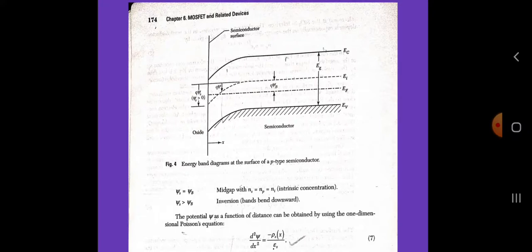In the absence of any work function difference, the applied voltage will appear partly across the oxide and partly across the semiconductor: V equals V_0 plus psi_s, where V_0 is the potential across the oxide and is given by V_0 equals epsilon_0 times d, which equals Qs times d divided by epsilon_ox, which equals Qs divided by C_0, where epsilon_0 is the field in the oxide, Qs is the charge per unit area in the semiconductor, and C_0 equals epsilon_ox divided by d is the oxide capacitance per unit area. The corresponding electrostatic potential distribution is shown in this figure.